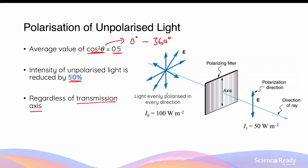For example, if the intensity of the original unpolarised light is 100 watts per meter squared, it will be reduced to 50 watts per meter squared after passing through a polariser with a vertical transmission axis. The final intensity will always be 50 watts per meter squared, even if the angle of the transmission axis changes.